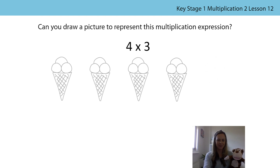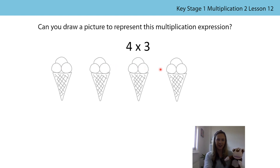That's better. We've got four groups and the three represents the number of objects in each group — so we need four groups of three, or four threes. One three, two threes, three threes, four threes. Now our picture represents the multiplication expression. Does your picture represent the multiplication expression too? Well done if it does.